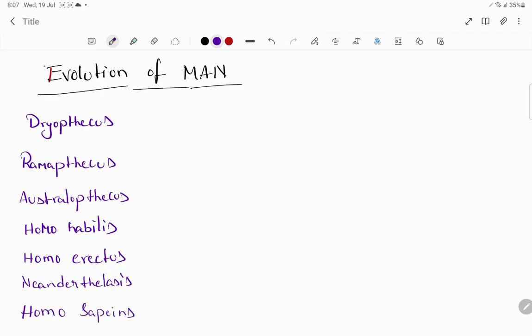And Homo sapiens. Coming to the main thing, Dryopithecus and Ramapithecus lived 15 million years ago. Australopithecus lived 2 million years ago. Homo erectus is 1.5 million years ago. Neanderthalensis is 100,000 to 40,000 years ago. Homo sapiens is 75,000 to 10,000 years ago.